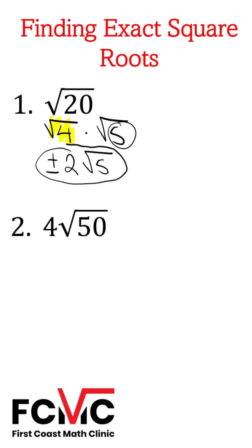For number 2, we've got 4 times the square root of 50. So 50, we could factor into square root of 25 times square root of 2. We'll multiply that by the 4.